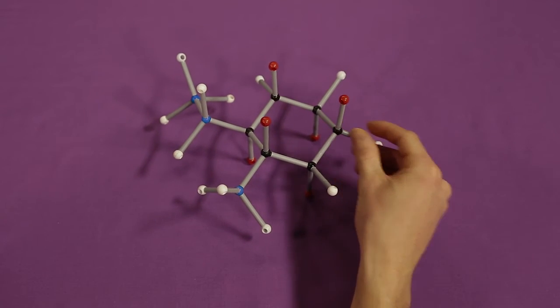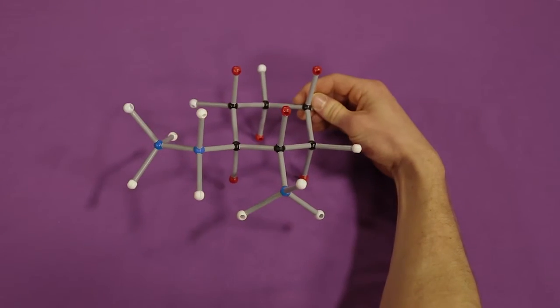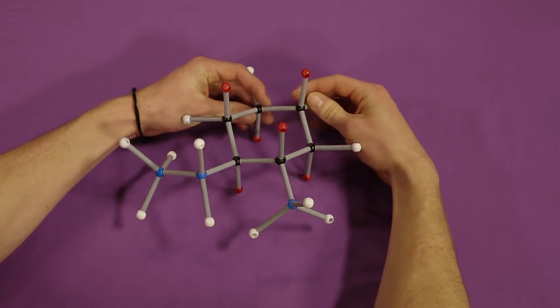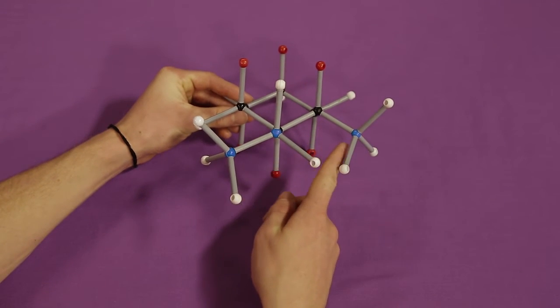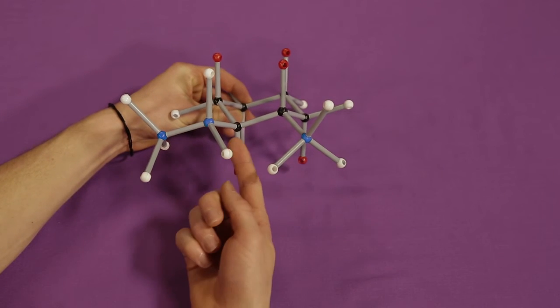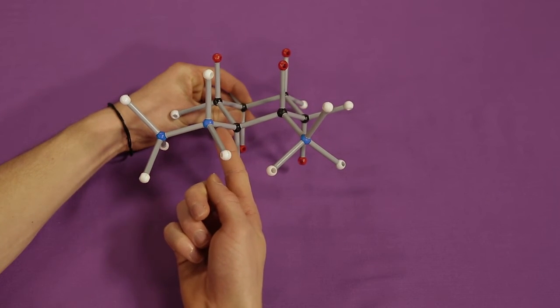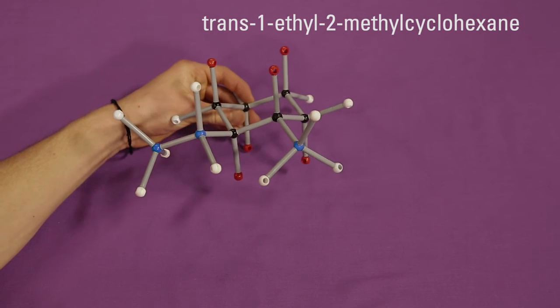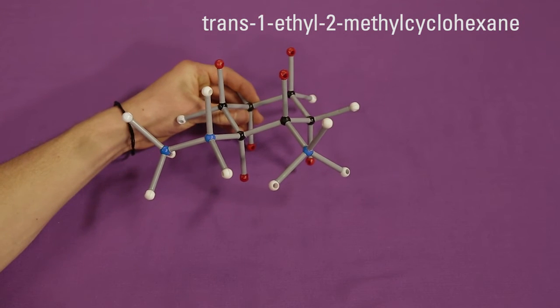Now, is this a trans or cis isomer? Notice how the methyl points down, while the ethyl points up. Hence, since the two groups point in different directions, this represents a trans isomer, trans-1-ethyl-2-methylcyclohexane.